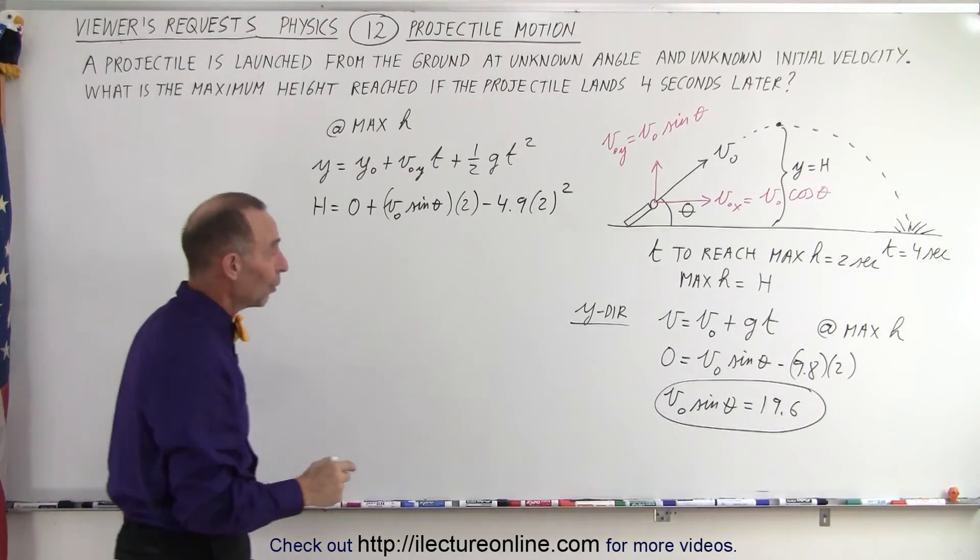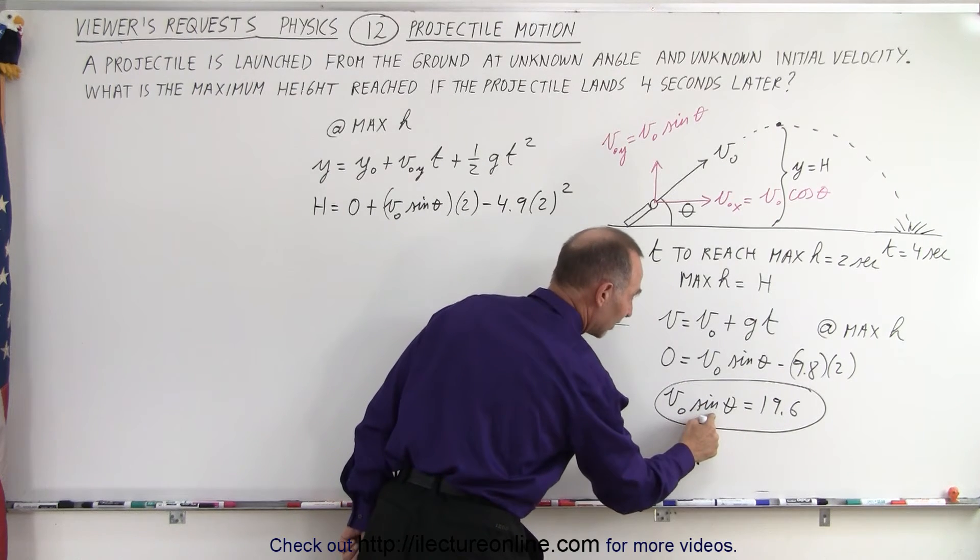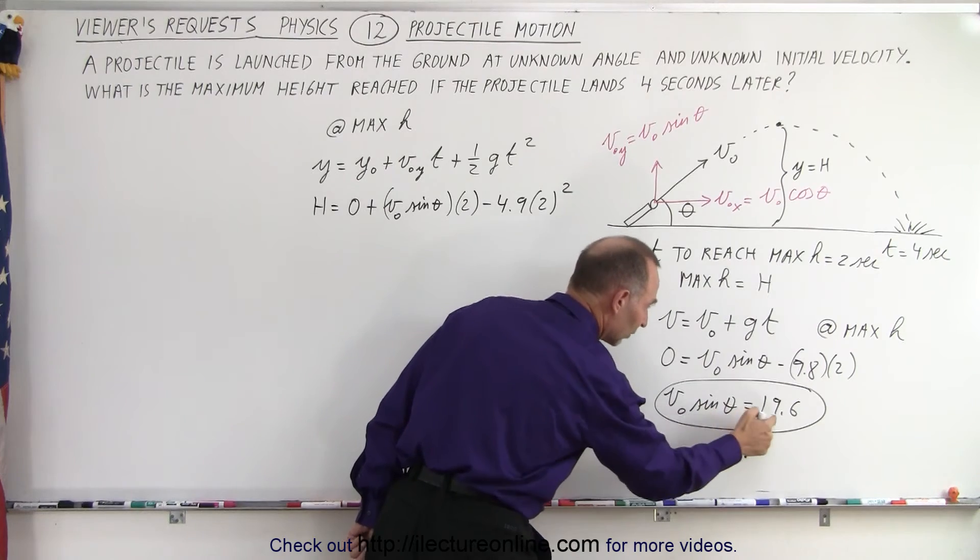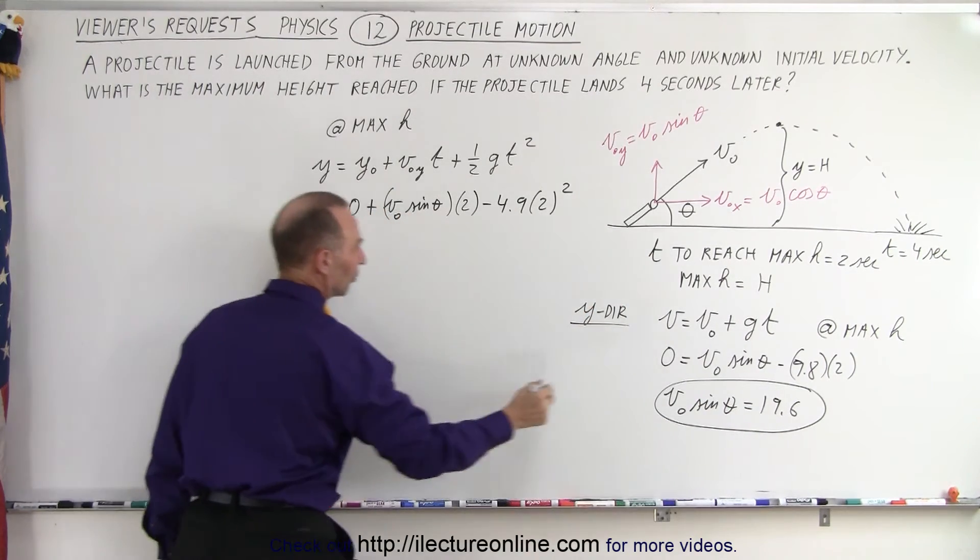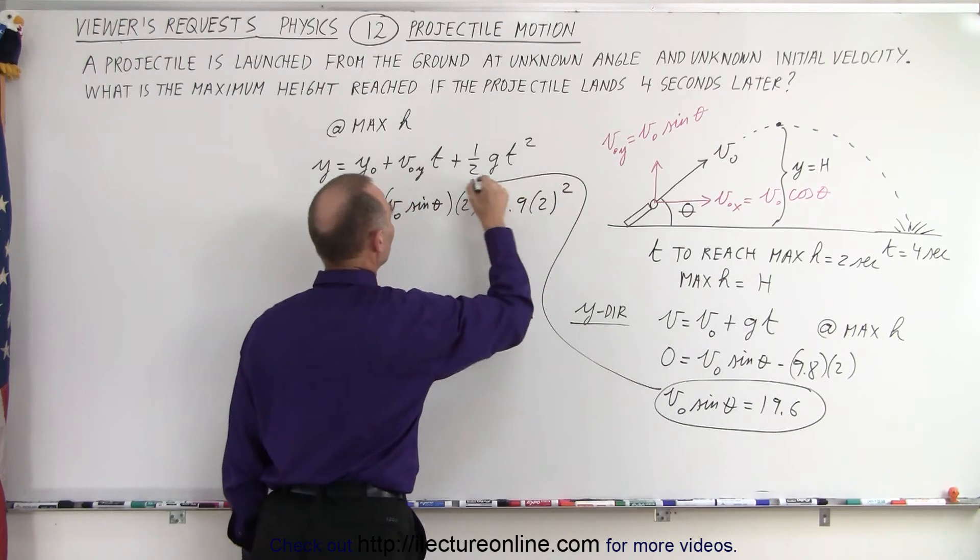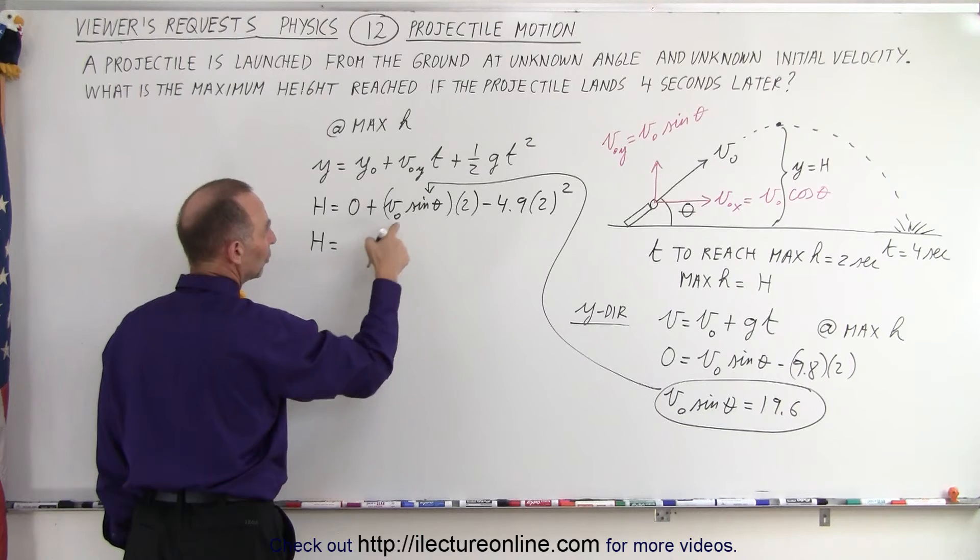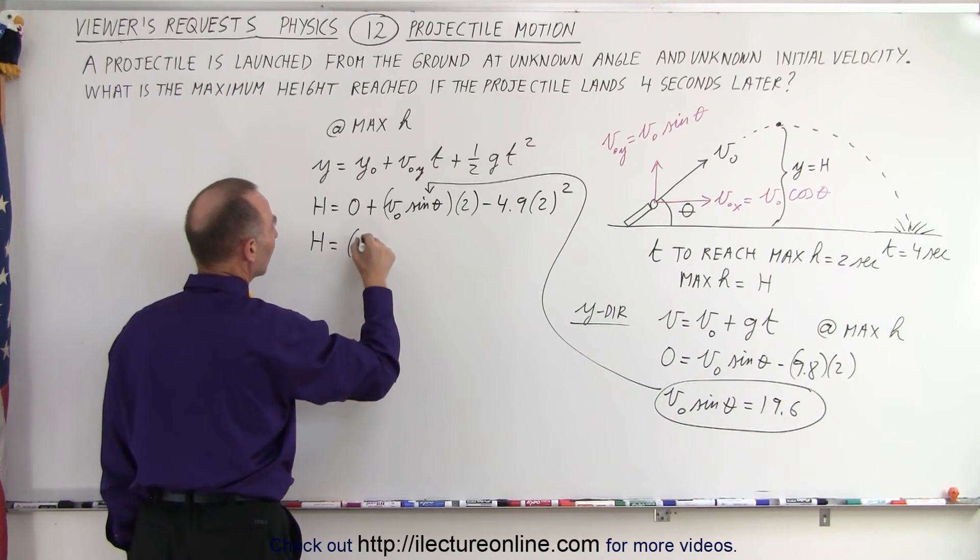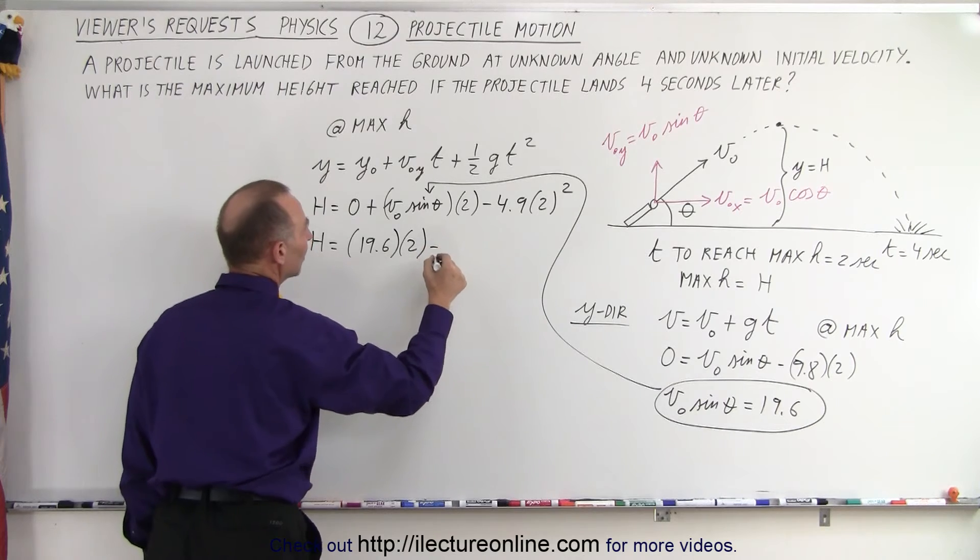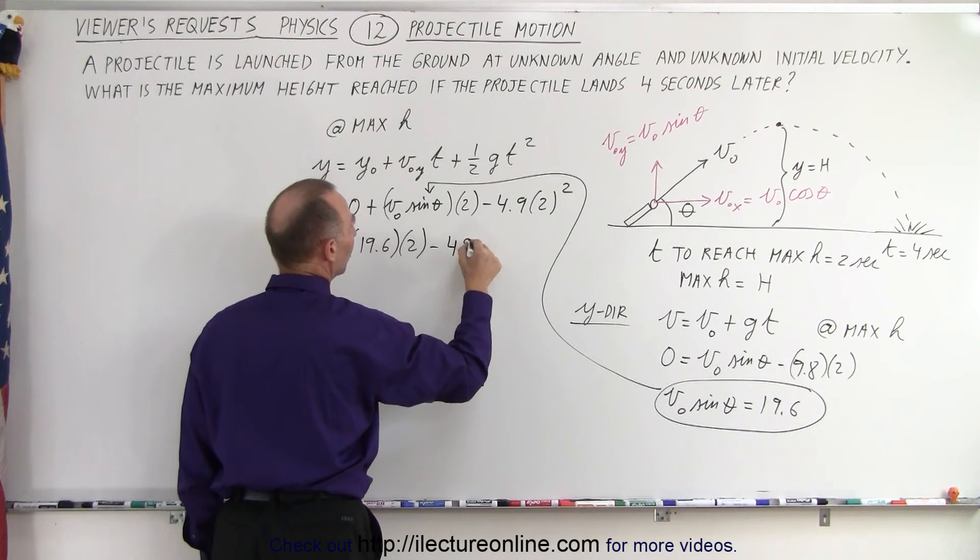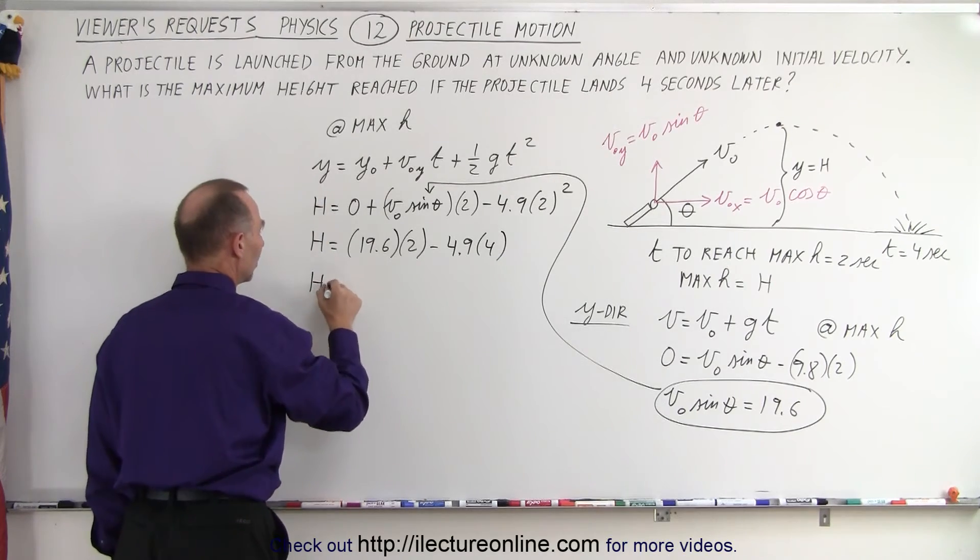Realizing that in this equation, we found the value not for v by itself or sine of theta by itself, but the product equals 19.6, which can be substituted in here. So height equals this quantity, which is 19.6 times two minus 4.9 times four.